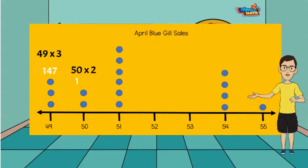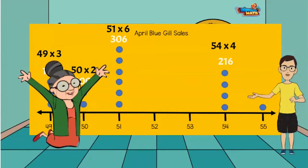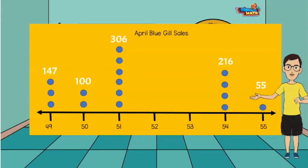50 times 2 is 100. 51 times 6 equals 306. 54 times 4 equals 216. Wait, I got this one — 55 times 1 equals 55. My mind is still sharp. Right on, Mrs. Kermogen. Now to get the total, we have to add all the products we found together. So we will add 147 plus 100 plus 306 plus 216 plus 55.